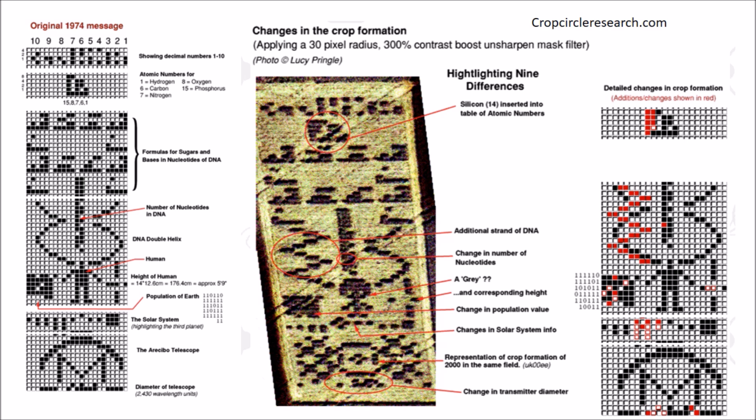This message was long forgotten until August 21, 2001, when an answer appeared in the form of a crop circle in Chilbolton, England. The message stated that they are made of silicon instead of carbon, with an extra DNA strain and have changes in the number of nucleotides. They seem to be shorter, but with a big head. At the spot where we showed our radio transmitter, they showed a crop field, as that was how best to send the message to us.